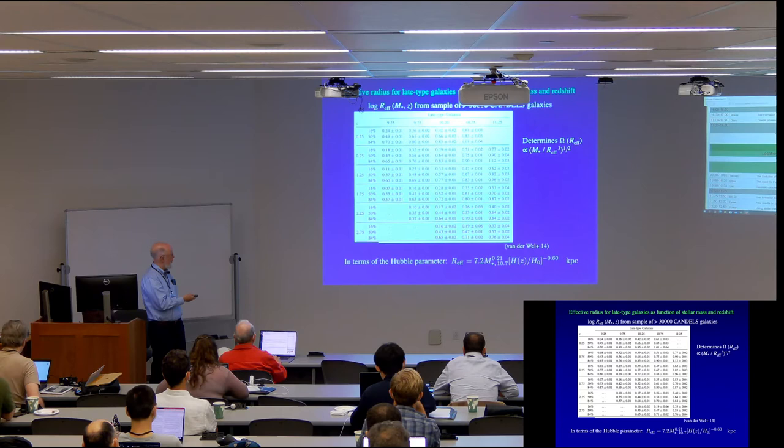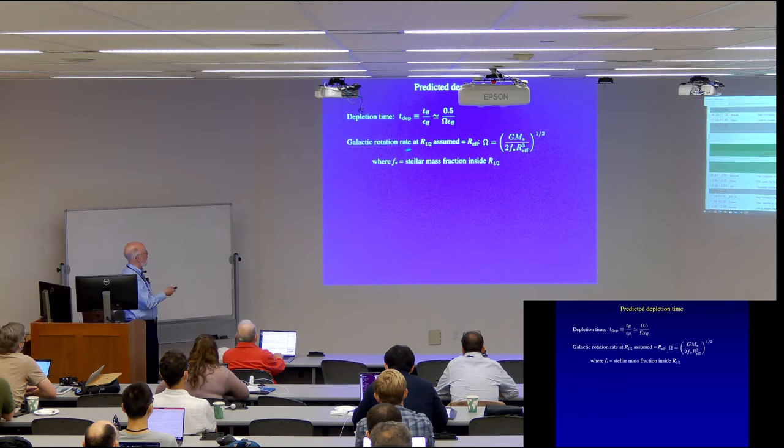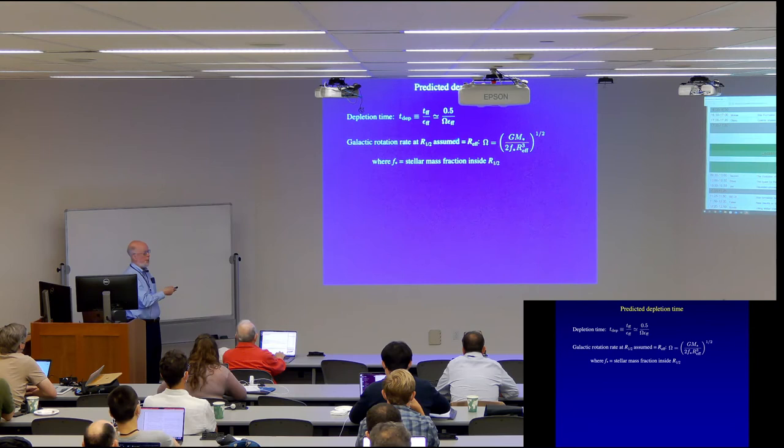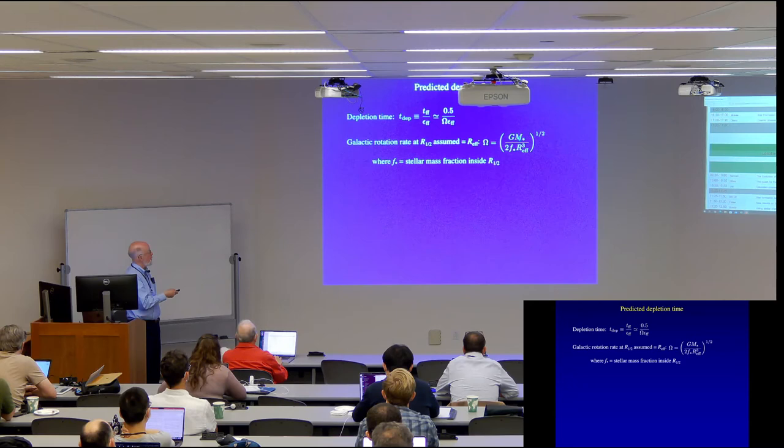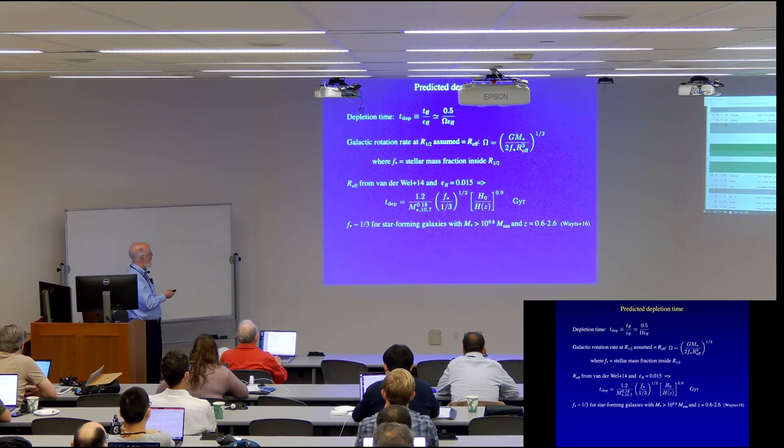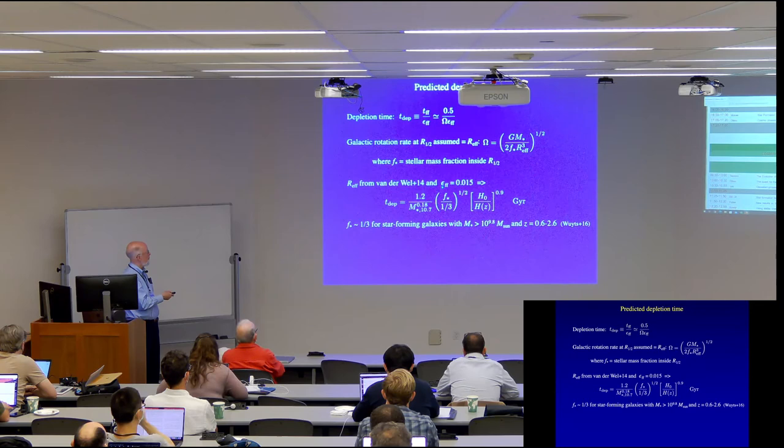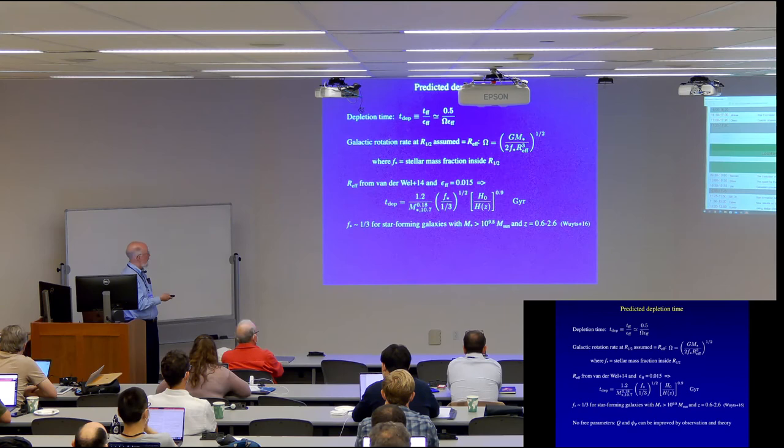So then we can now, in a position to predict the depletion time. So we have that the depletion time is this 0.5 divided omega epsilon ff. The galactic rotation rate, and I'm making the approximation that the half mass radius is equal to the half light radius, which, as Arjun said, there can be a 0.15 to 0.2 dex offset. And then I'm going to want to relate it to the stellar mass, but of course the rotation rate depends on the total mass, so we have to divide by the fraction of the mass that's in stars. And if I go ahead and take the value of the effective radius from Arjun and use the average value that we found for this epsilon ff, we get this result for the depletion time. And I've normalized this f star to one-third based on results of Wood et al.